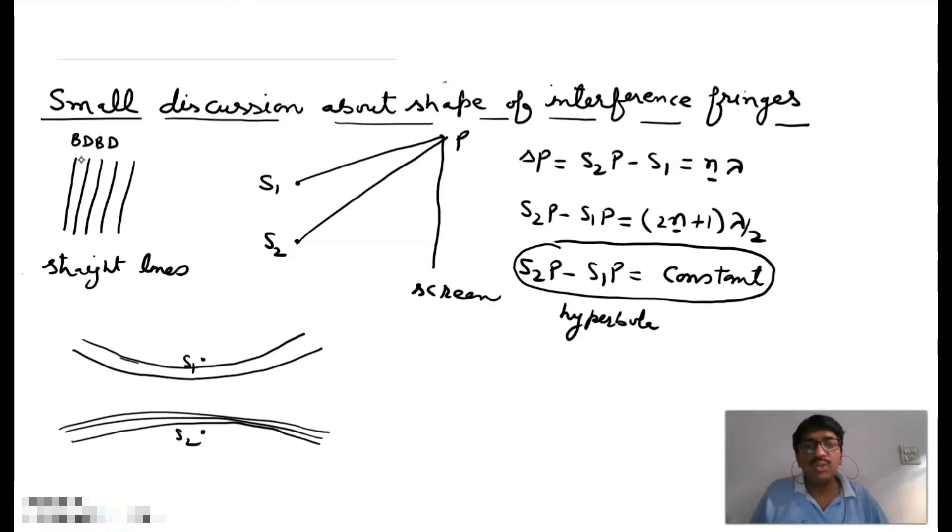But due to large eccentricity we can see only that part. If we see by the help of telescope we see only that part and we can see only a straight part, straight line